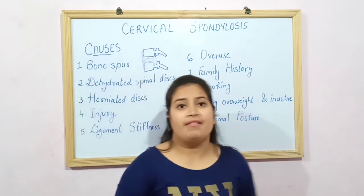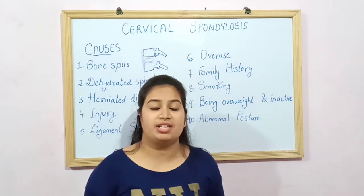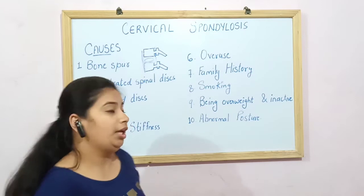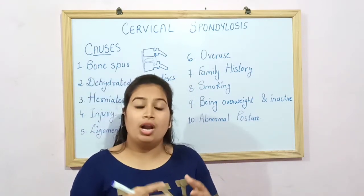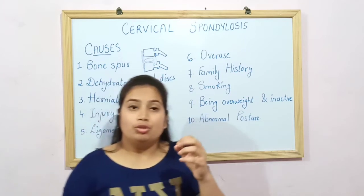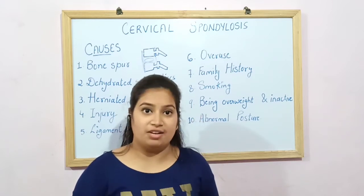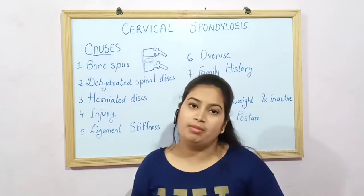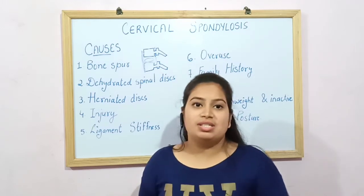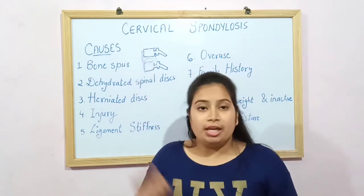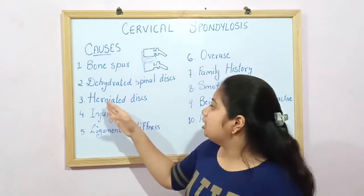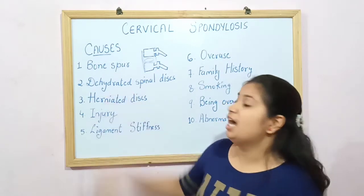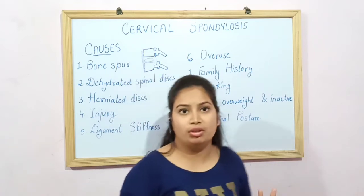The next cause is family history. If your parents or a sibling have cervical spondylosis, you are prone to this condition. The next cause is smoking. Due to smoking, your micro vasculature gets affected, and since vertebral discs get their nourishment from these micro vessels, the disc will not receive nourishment. This leads to earlier degeneration, dehydration, and wear and tear of the disc.